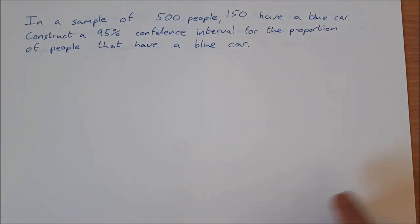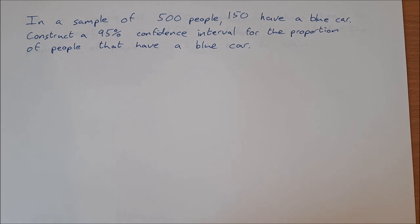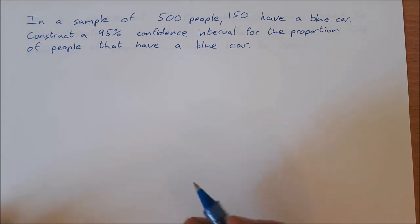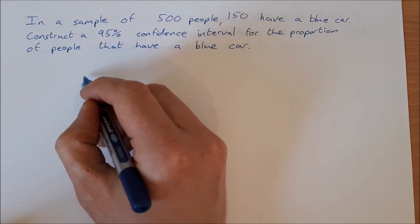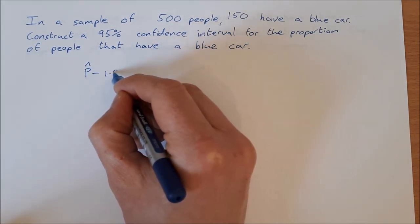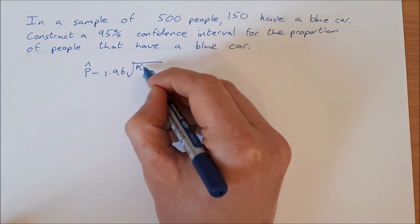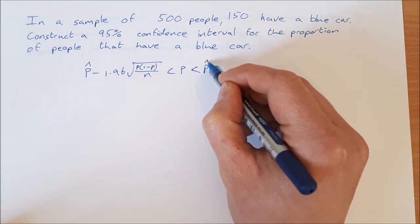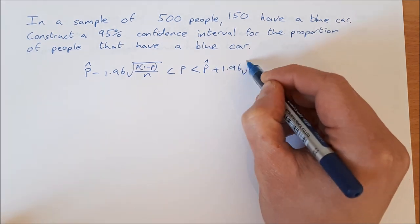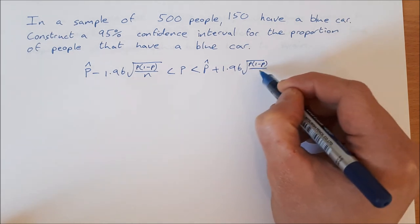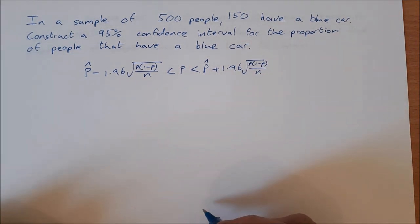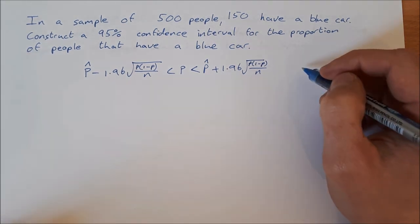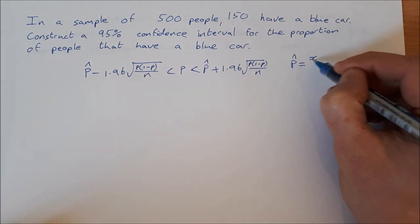Example 1: in a sample of 500 people, 150 have a blue car. Construct a 95% confidence interval for the proportion of people that have a blue car. The first thing to do is write down the formula for the confidence interval: 95% CI is p-hat minus 1.96 times the square root of p times (1 minus p) over n, less than p, less than p-hat plus 1.96 times the square root of p times (1 minus p) over n.